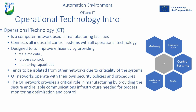Operational technology tends to be isolated from other networks due to its criticality. Since you're dealing with real-world physical assets, any level of intrusion, cyber attack, or mistake can have serious real-world repercussions. These consequences could relate to processes going down, costing a company millions of euros, or even life-critical or mission-critical consequences — especially in medical technology or biopharma processes, which are strictly regulated. OT networks operate with their own security policies and procedures.